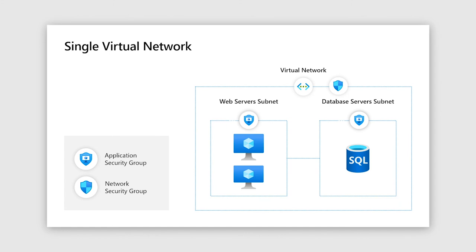In this model, the web service subnet and database subnet can control traffic between each other. The web service subnet can communicate directly to the internet, while the database service subnet denies any traffic from the internet and only accepts specific types of traffic from the web service subnet. If a security attack takes place, it can only breach the web service subnet initially. With strong NSG and ASG traffic filtering, the database service should still be protected — this is an example of effective segmentation at a very small level.